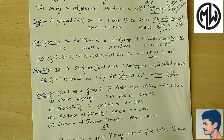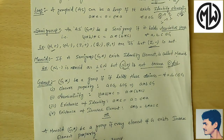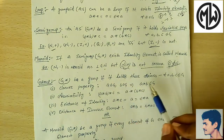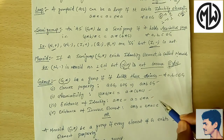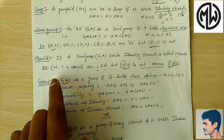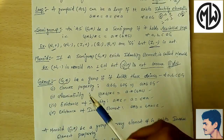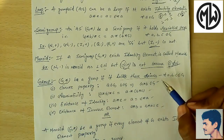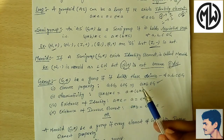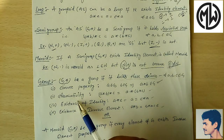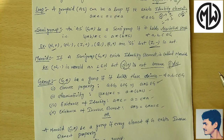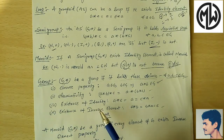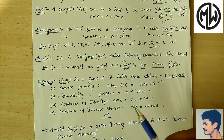Now the main topic is group. (G, star) will be a group if and only if it holds these four axioms. Any set G with binary operation star, if it satisfies all four properties, then it is a group, otherwise not. First is closure property: a belongs to G, b belongs to G implies a star b belongs to G. Second is associativity: (a star b) star c = a star (b star c), for all a, b, c belonging to G. Third is existence of identity element: a star e = a = e star a, where e is the identity element.